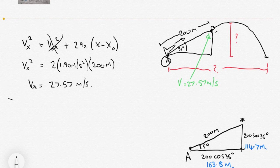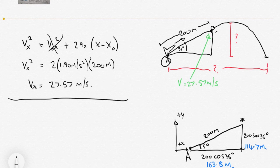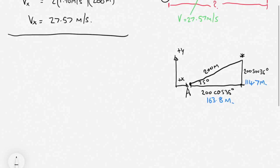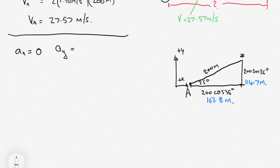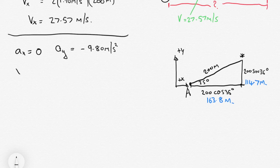For the second part, we switch to a standard coordinate system: plus-y is upward, plus-x is horizontal. We can use two different coordinate systems since we've split this into two separate problems. The acceleration in the x-direction is zero; the acceleration in the y-direction is −9.8 m/s².